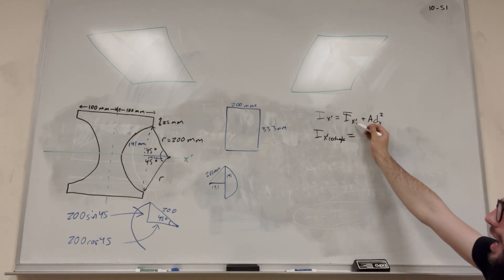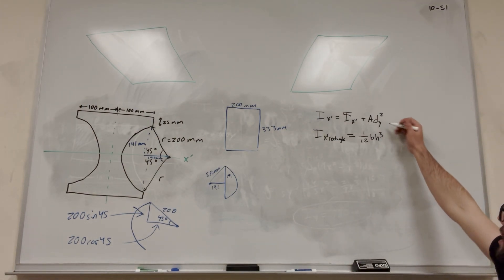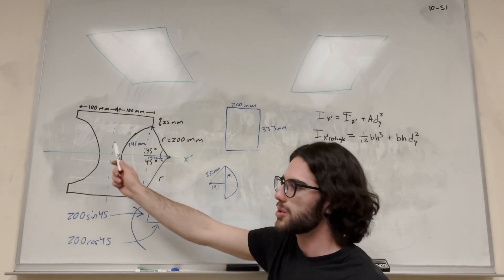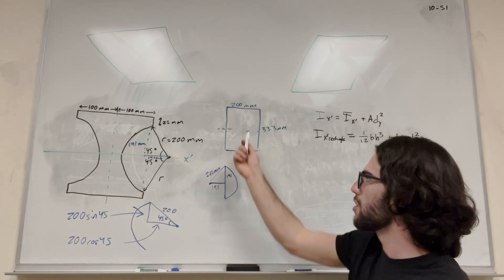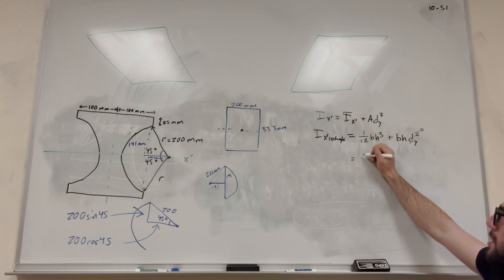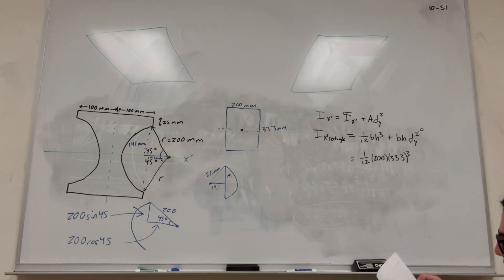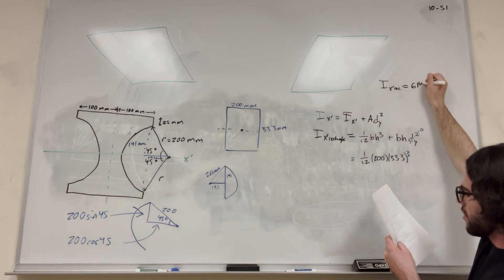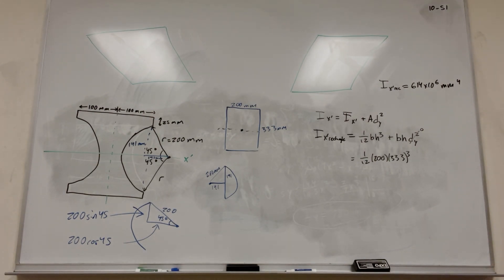Let's do it for the rectangle first. I_x' of the rectangle equals I_x-bar, which from the back of the book is (1/12) × base × height³, plus area times the distance in y squared. Since the centroid line lies on the centroid of the shape, the distance in y is zero, so that entire term becomes zero. We're left with (1/12) × 200 × 333³. So I of x for the rectangle equals 614 times 10 to the sixth millimeters to the fourth.